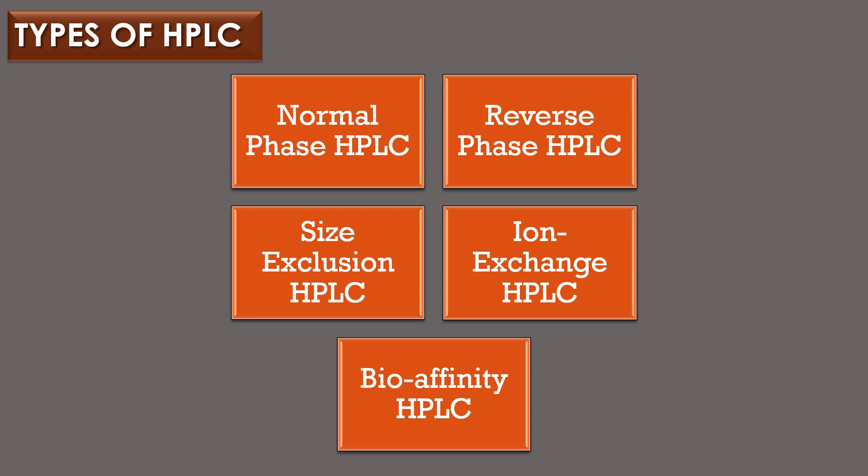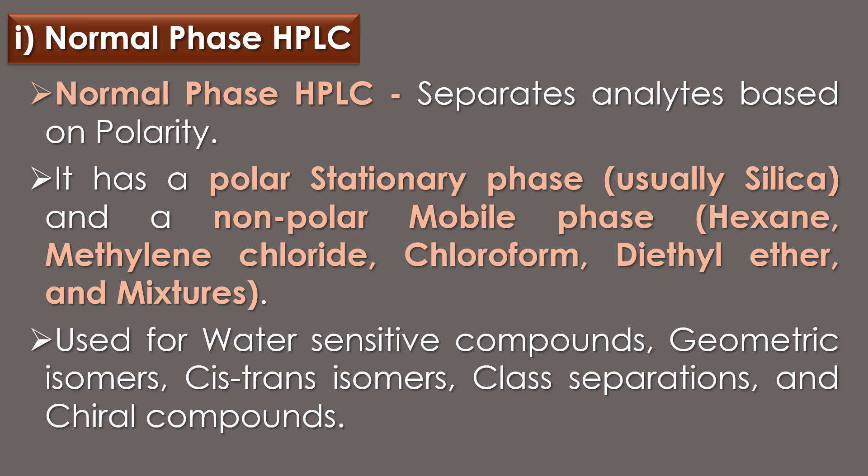There are five types of HPLC: normal phase HPLC, reverse phase HPLC, size exclusion HPLC, ion exchange HPLC, and bio affinity HPLC. Normal phase HPLC separates the analytes based on polarity. It has a polar stationary phase, usually silica, and non-polar mobile phases like hexane, methylene chloride, chloroform, diethyl ether, and mixes of solvents. The normal phase HPLC technique is used for water-sensitive compounds, geometric isomers, cis-trans isomers, class separations, and chiral compounds.